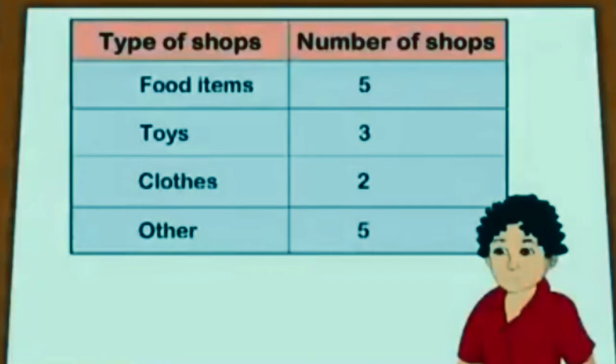The second type is toys, and the total number of toy shops is three. In that fair, the third type of shop is clothes, and the total number of cloth shops is two. And some other shops are also there, totalling five.